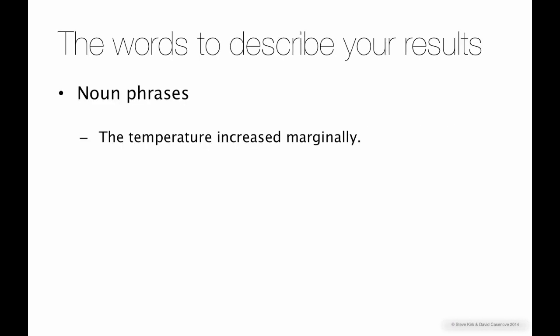Scientific writing really likes big noun phrases. So sometimes we might change a sentence like this into one like this. Notice that the meaning is the same, but we converted the verb increased into the noun an increase, and we converted marginally into an adjective marginal. So increased marginally becomes there was a marginal increase. This is a very common pattern in academic writing.